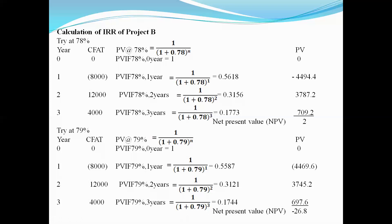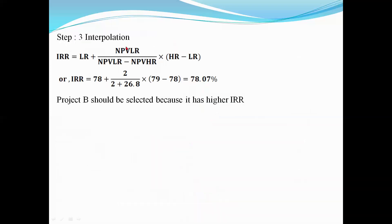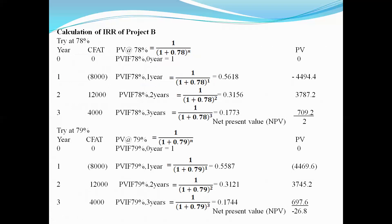The answer is: lower rate 78%, NPV at 78% is positive, NPV at 79% is negative 26.8. The IRR for Project B is approximately 78.07%, which means Project B will increase the IRR. We will try and interpolate with a certain percentage plus or minus to solve this problem. Thank you so much for watching today.